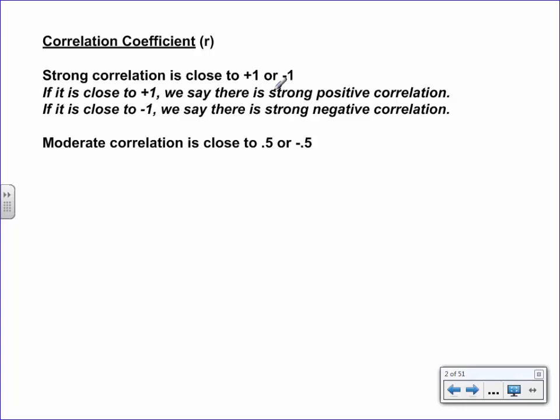Now, the correlation coefficient, which is abbreviated with lowercase r, if it's strong correlation, if it's strong positive correlation, r is close to positive one. And just so we don't get too specific, we'll say, okay, if there's moderate correlation it will be plus 0.5 or negative 0.5. But something that has a correlation close to positive one would have its points very much close to forming a line. That would be something with a correlation close to positive one.